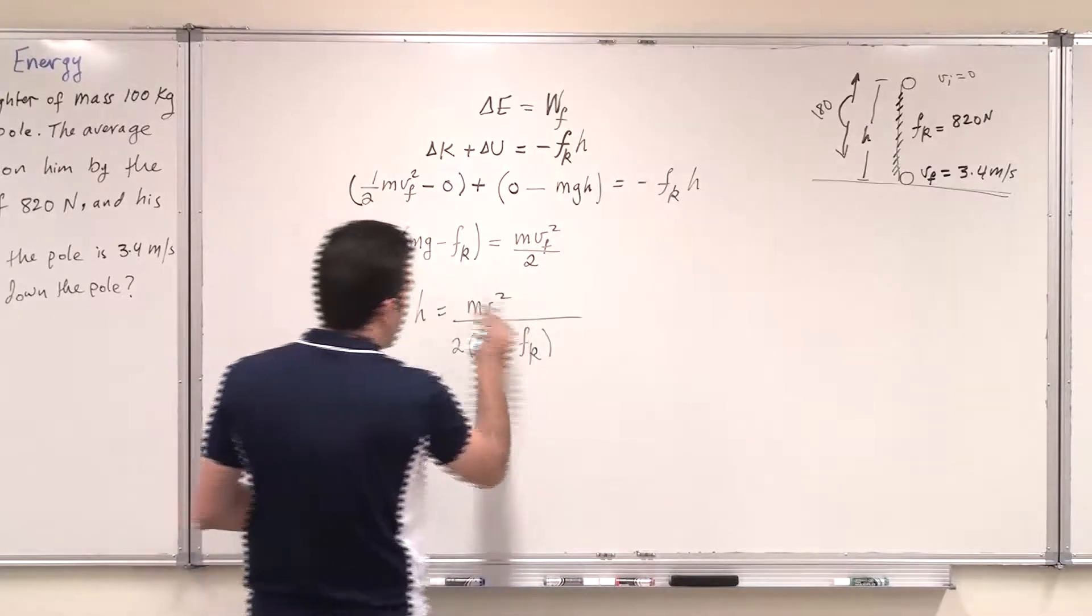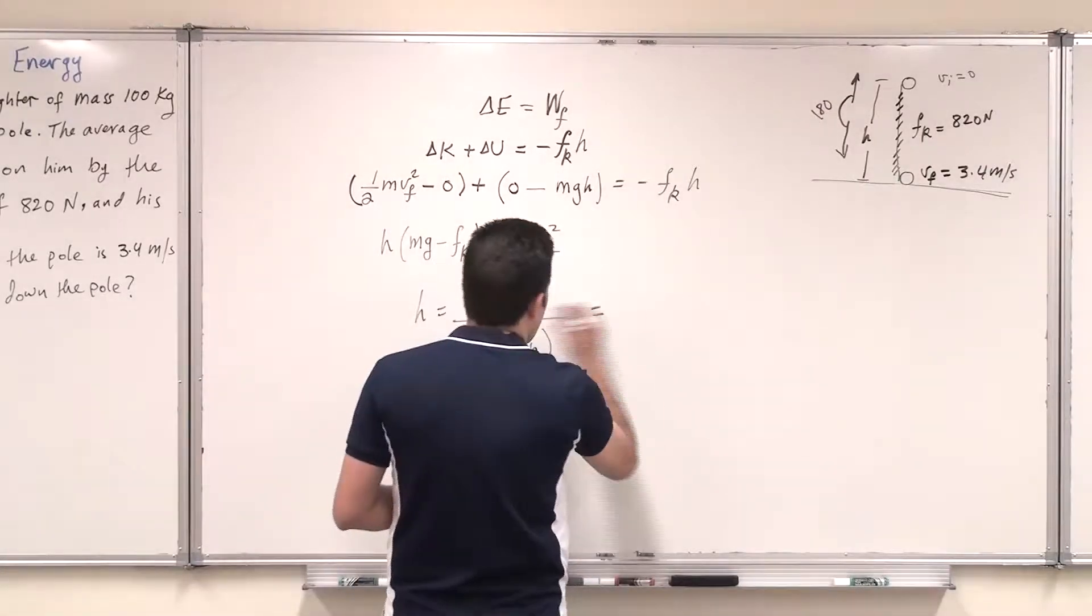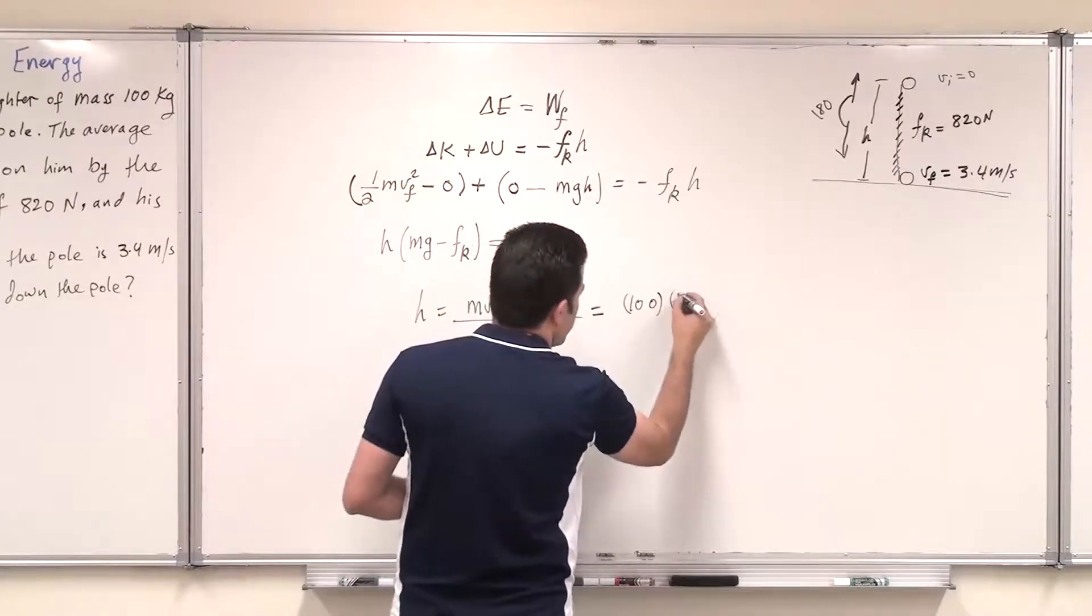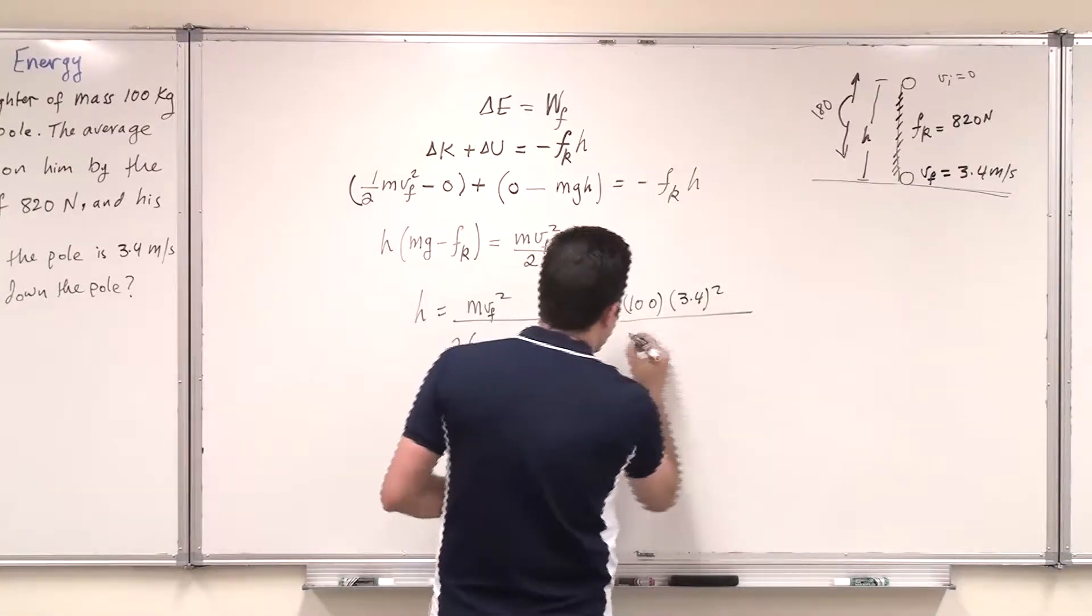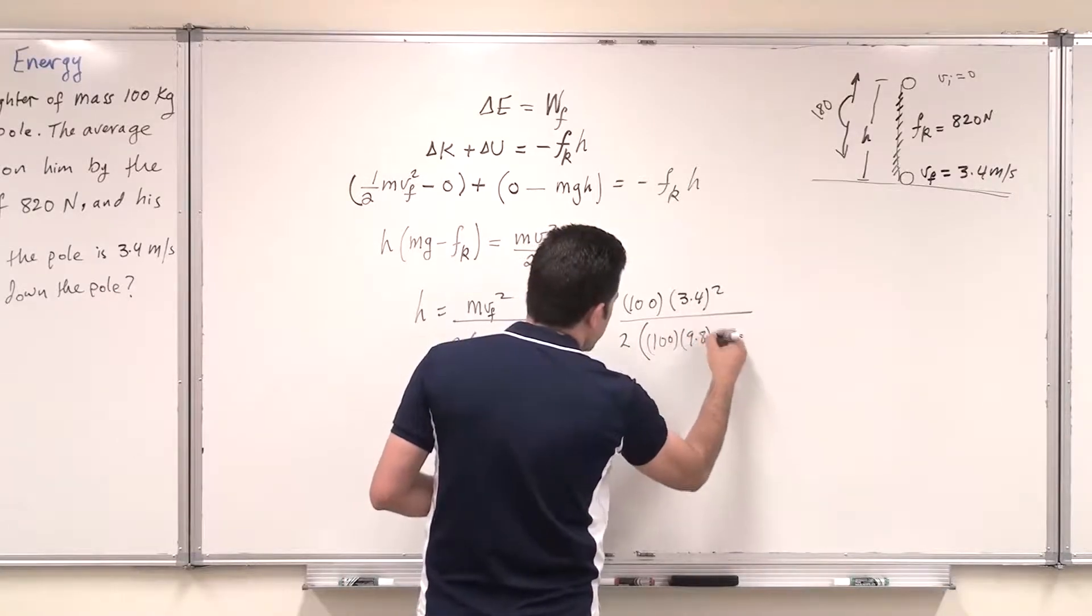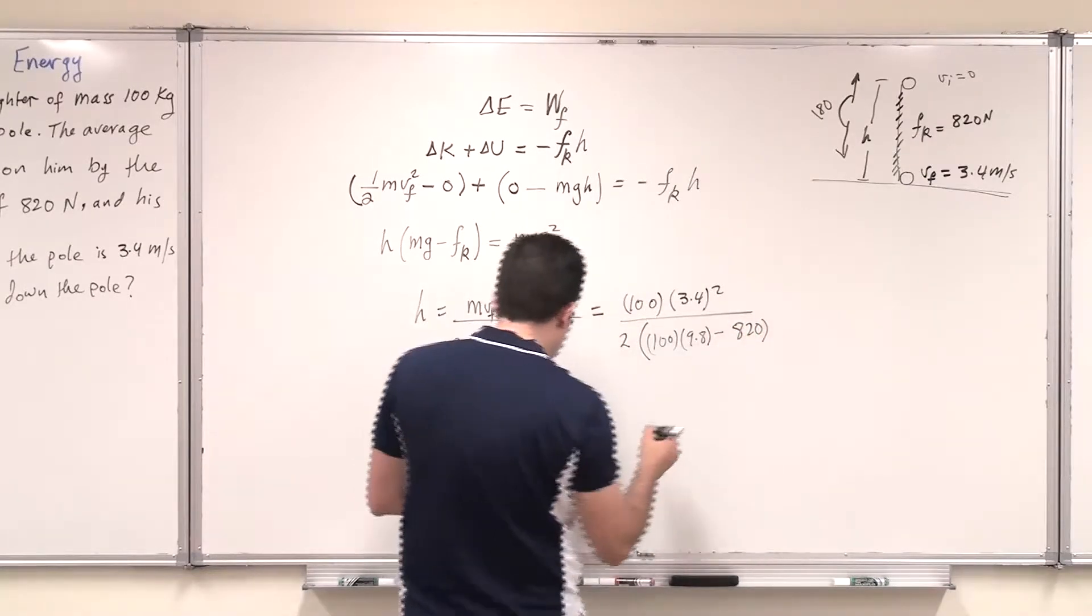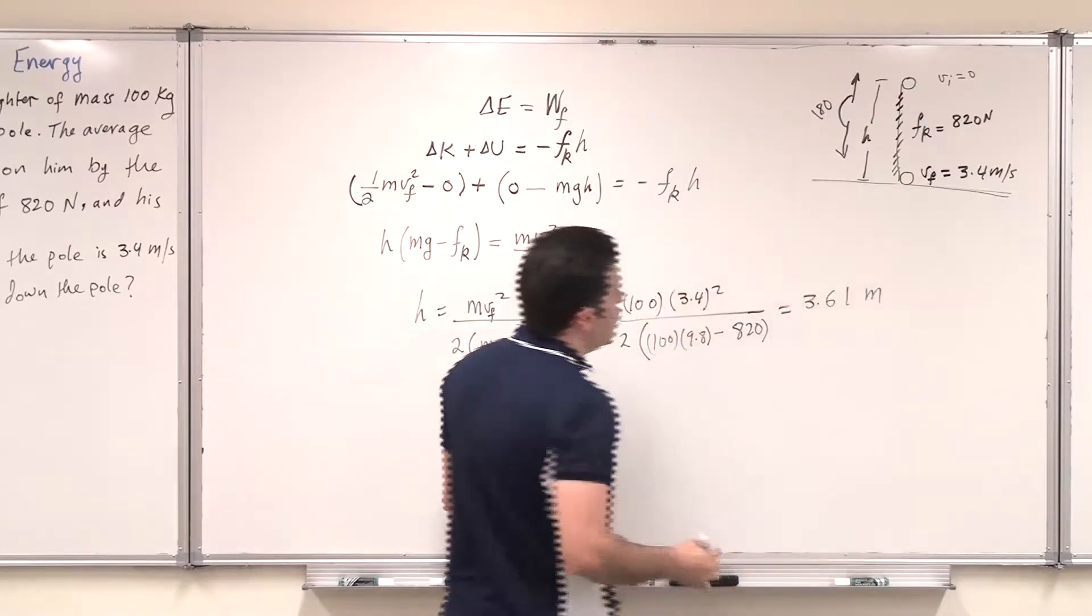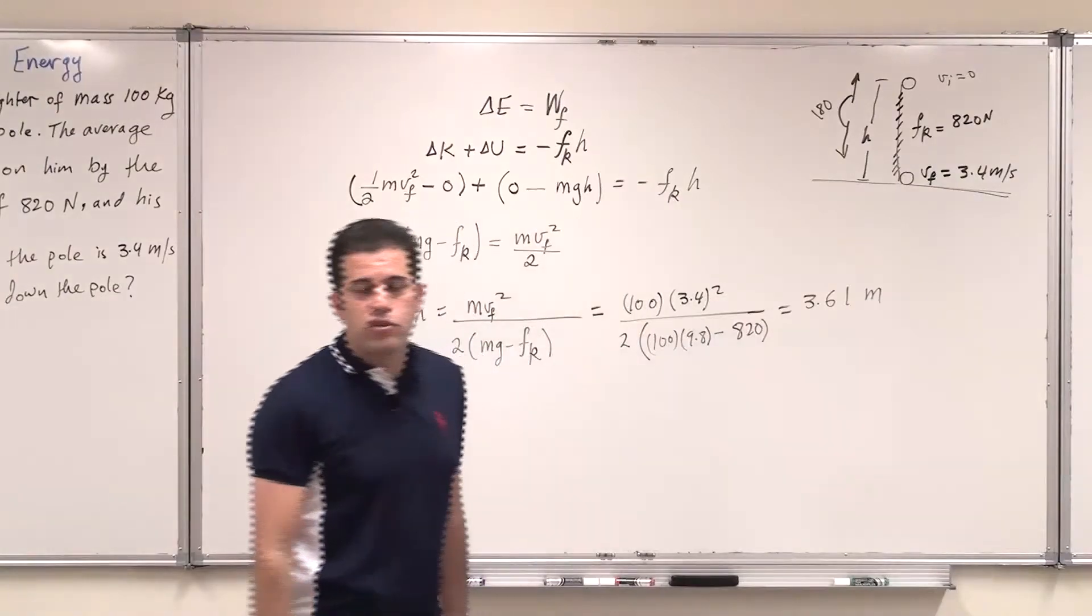And now I can substitute for all these values that I have to find the distance the firefighter slides down. So that his mass is 100 kg times v squared, which is at the bottom, which is 3.4 squared, so this is v final, divided by 2 times m 100 multiplied by 9.8 meters per second squared minus 820. This is the average force of friction, and this will yield a distance of 3.61 meters. So this is the distance the firefighter slides down to the bottom of the reference point. Thank you.